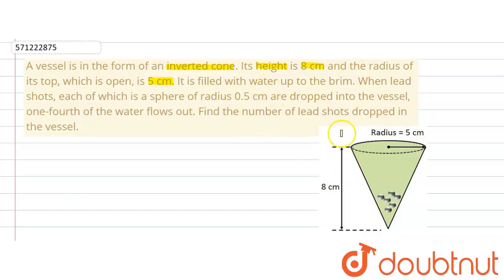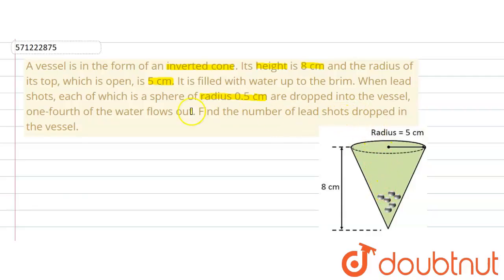It is filled with water up to the brim. Lead shots, each of which is a sphere of radius 0.5 cm, are dropped into the vessel.